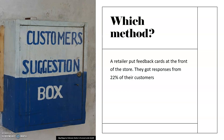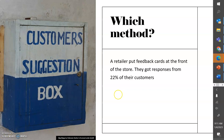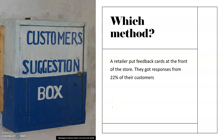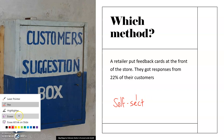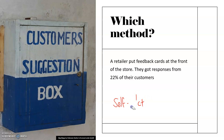A retailer puts feedback cards at the front of the store and got responses from 22% of their customers. This is voluntary — the customers are self-selecting whether they want to answer the questions or not. So self-selected sampling is the method here.